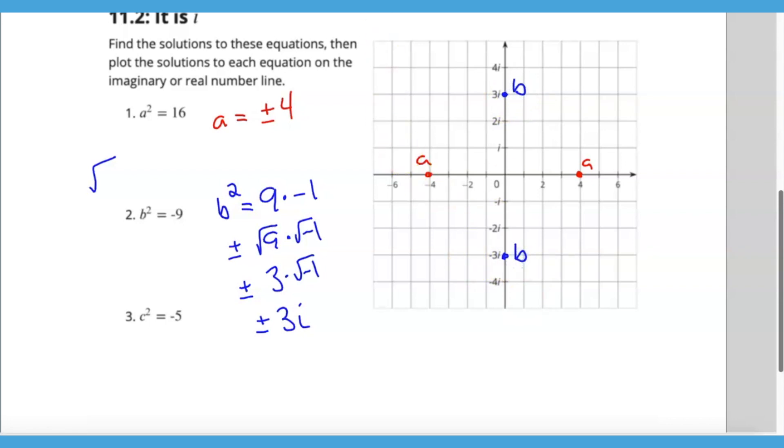We can do the same thing here. We could say 5 times negative 1, we could look at plus or minus the square root of 5 times the square root of negative 1. The square root of 5 is irrational and the square root of negative 1 could be i. Then we could represent that—it should be a little bit above 2, not to 3, and a little below 2, not quite to 3.